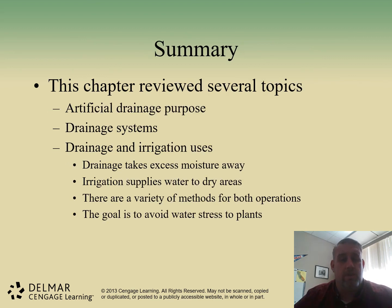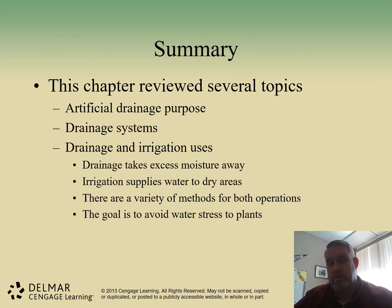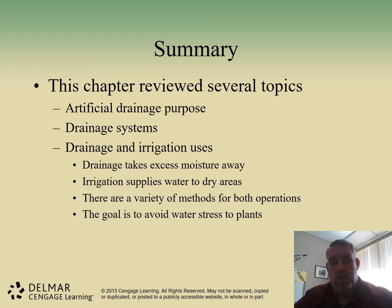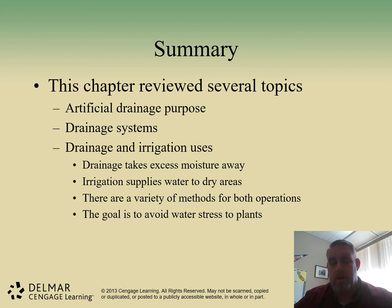That's the end of this chapter. In summary, I hope you understand what artificial drainage is, why we use it, the different types of drainage systems, and drainage versus irrigation usage. One important note: at times you will have a drainage system and an irrigation system used in conjunction — you still have to get water to plants, but sometimes water can be held in areas where plants don't like it, and that's when you utilize the drainage system. Thank you, and we'll see you next time.